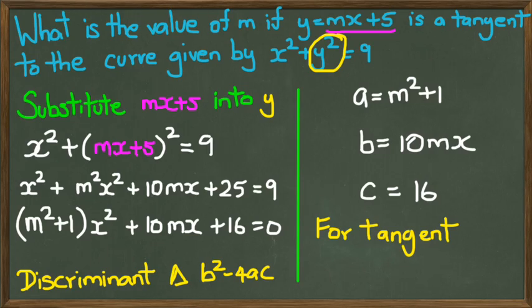And as I said before, for tangent, b squared minus 4ac needs to equal 0. Okay, moving on to the next slide, because I'm obviously running out of space here.